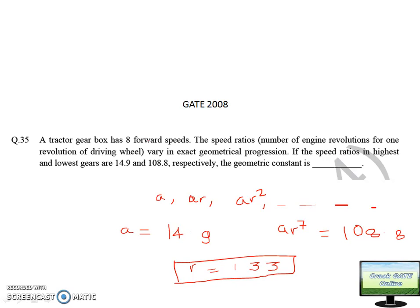Finally I am going to solve one more and last question in this video. This question was asked in GATE 2008. A tractor gear box has 8 forward speeds. The speed ratios, number of engine revolutions for one revolution of driving wheel, vary in exact geometrical progression. So all the gear speed ratios are in geometrical progression, GP. In mathematics you must have learned that geometrical progression will be something with this structure: A, AR, AR square. If you divide second term with first term, you will get a common R value. This ratio will remain constant in geometrical progression.